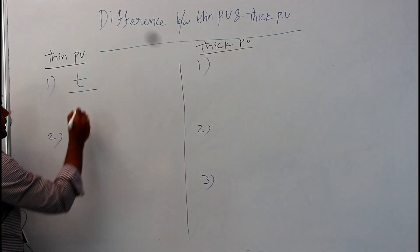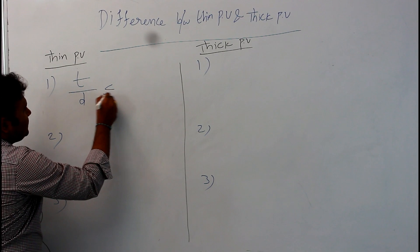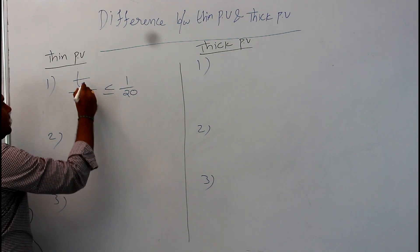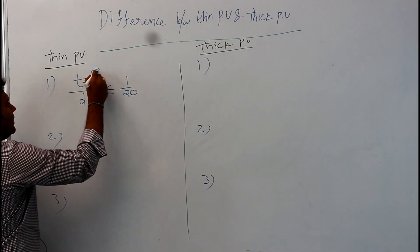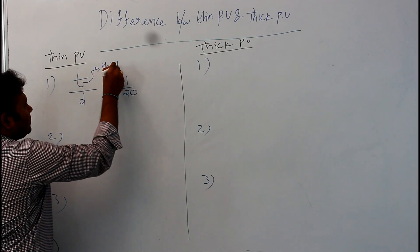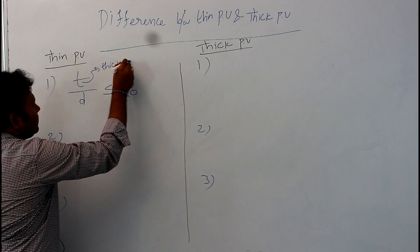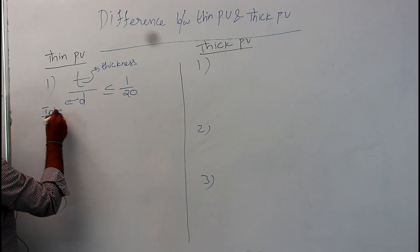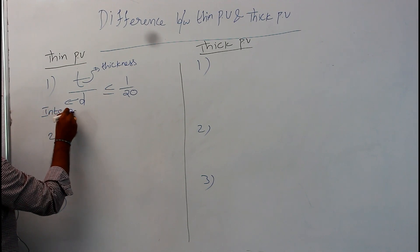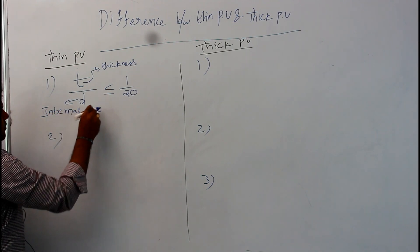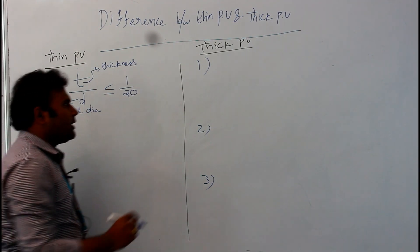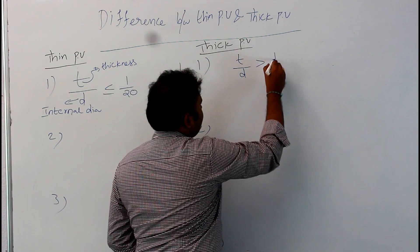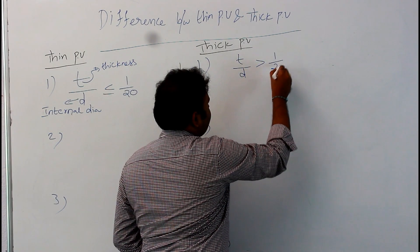The first difference: for a thin pressure vessel, T by D is less than or equal to 1 by 20, where T means thickness and D means internal diameter. For a thick pressure vessel, T by D is greater than 1 by 20.